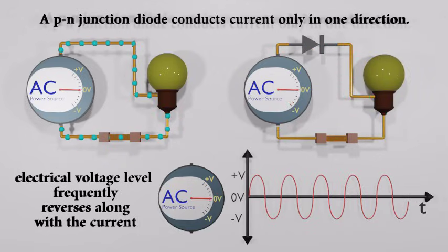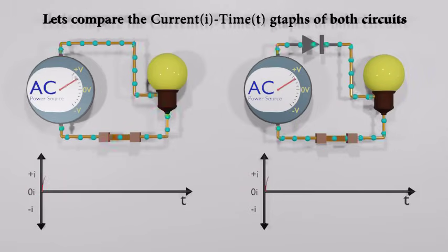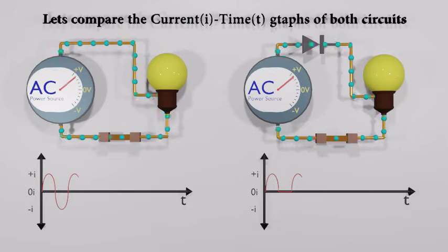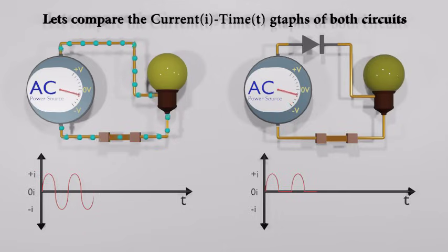So in the circuit, current is only flowing through in one direction. Let's graph the current on both circuits. You can see that only the half of the input wave is passed through the diode, so it is called half-wave rectifier.